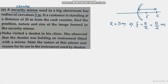The customer is standing at a distance of 20 meters from the cash counter. Assuming the cash counter is at the pole of the mirror, the customer is standing here. The customer is the object at a distance of 20 meters.